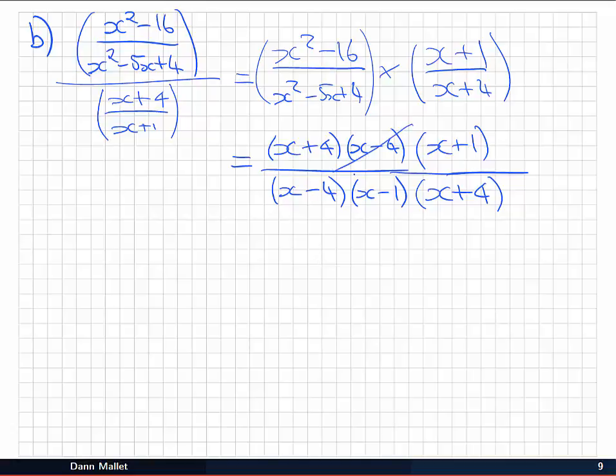I can see an (x - 4) on the top and the bottom. And also an (x + 4), top and bottom. So I can cancel those. Leaving me with (x + 1) on the top and (x - 1) on the bottom. And there's not really anything else I can do with that. So I can just leave that one as my result of this division up the top.